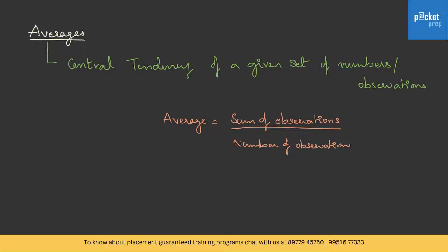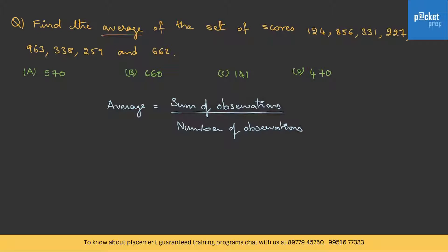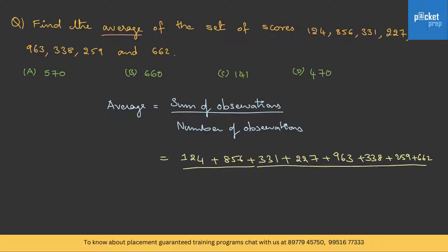Let's get into Type 1 — basic formula-based questions. Find the average of the set: 124, 856, 331, and so on. Using the formula, average equals sum of observations divided by number of observations. The sum is 124 plus 856 plus 331 and so on, divided by 8, giving 3760 upon 8, which is 470. Therefore the answer is option D.